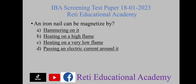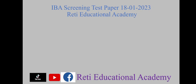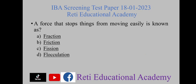An iron nail can be magnetized by — A) hammering on it, B) hitting on a high flame, C) hitting on a very low flame, D) passing an electric current around it. The right option is A) hammering on it.